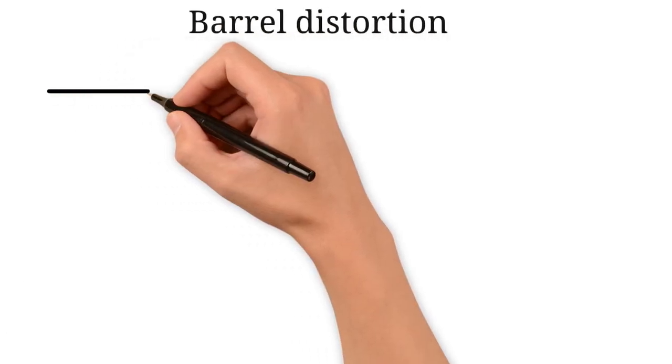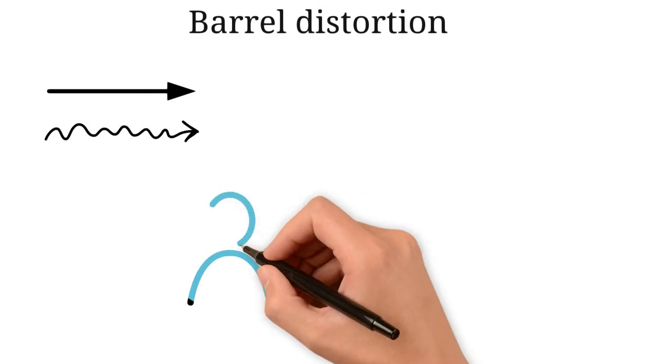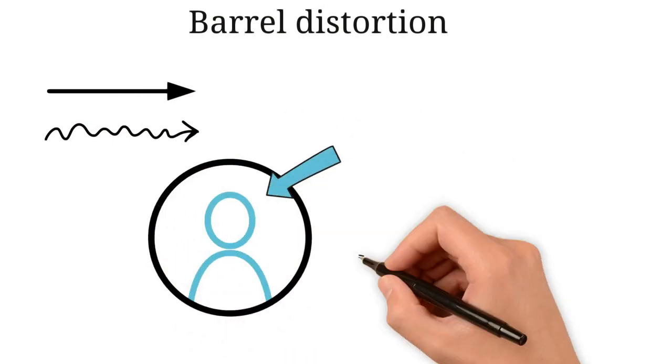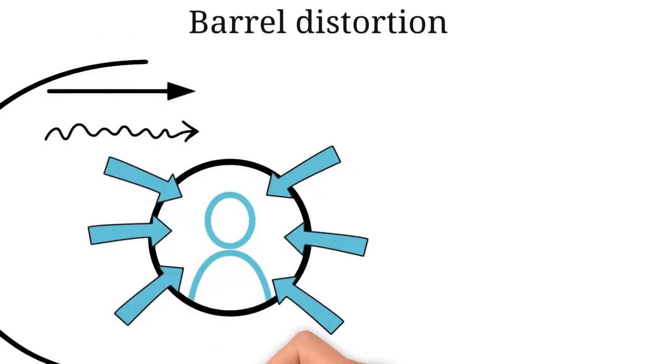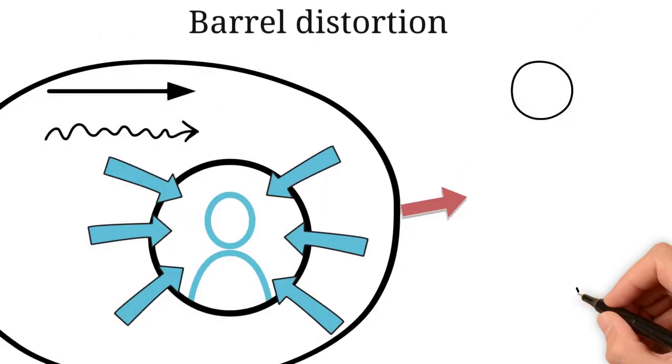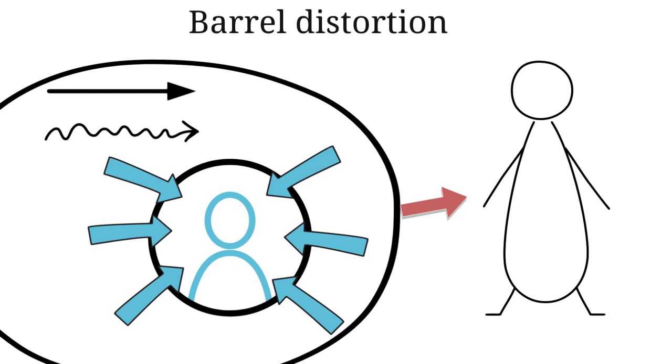Barrel distortion. This is a situation where straight lines will appear curved, and the lens slightly magnifies the center of the photo more than the edges. This situation will make you look bigger in pictures than you are in real life.